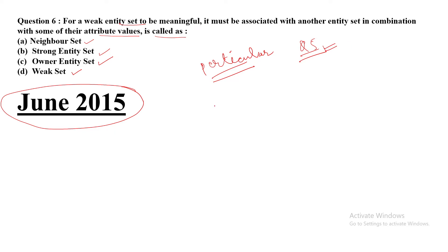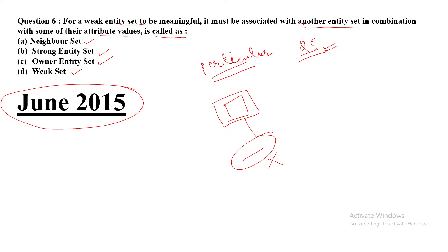For a weak entity set to be meaningful: a weak entity set is denoted by a double rectangular box. A weak entity set does not have its own key attribute — that is what makes it a weak entity set. It must be associated with another entity set, which is called a strong entity set. A weak entity can only connect to a strong entity set, not to another weak entity set.